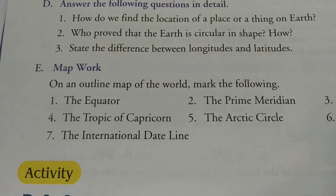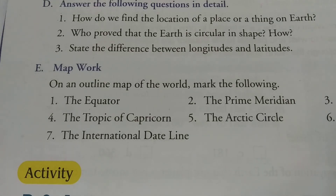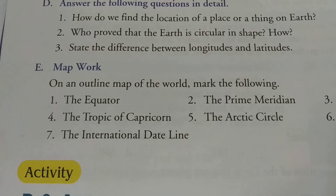Fourth point of longitude: 'There are 360 lines of longitude, that help for determining time.' Now go to the latitude column, fourth point: 'There are 181 lines of latitude.' Full stop.